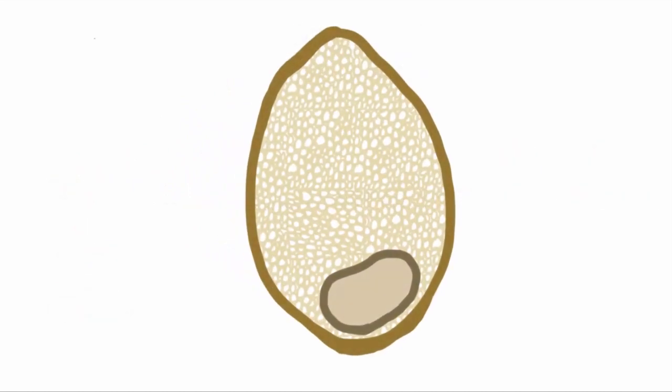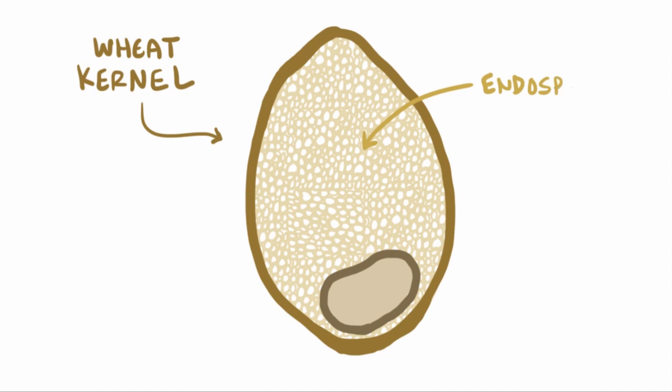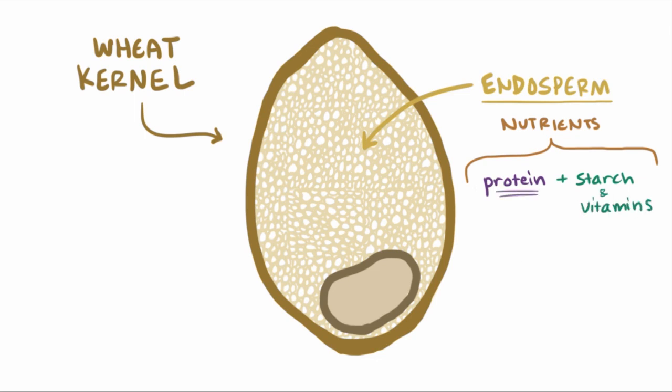If we take a look at wheat, you've got your individual wheat kernels, and then inside each kernel there's this endosperm, which has a bunch of nutrients for the seed's embryo, mostly protein and starch, and some vitamins. The type of protein here is gluten, which is the main culprit in celiac disease.